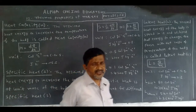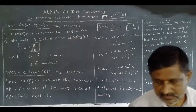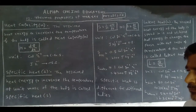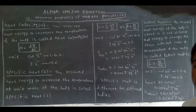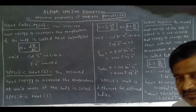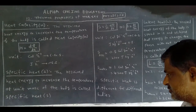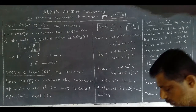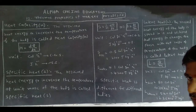Specific heat is different for different bodies. For example, copper, brass, and iron are different objects — different bodies. For different bodies, the specific heat is also different. This is one of the important topics for the exam.